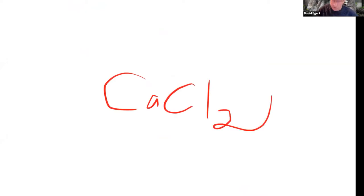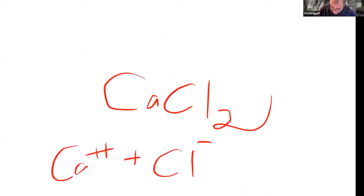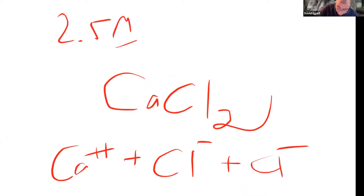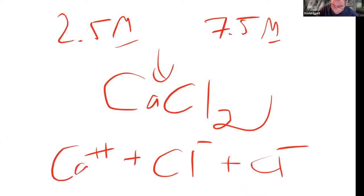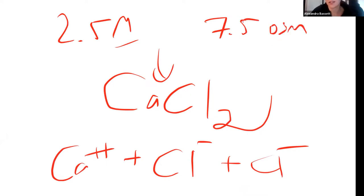If I had calcium chloride, which we saw in our lab — what does it break into? Three. It's going to be Ca²⁺ plus two Cl⁻ ions. So if this was 2.5 molar calcium chloride, the osmolarity would be 7.5. However many particles it breaks into, multiply that times the molarity to get the osmolarity.